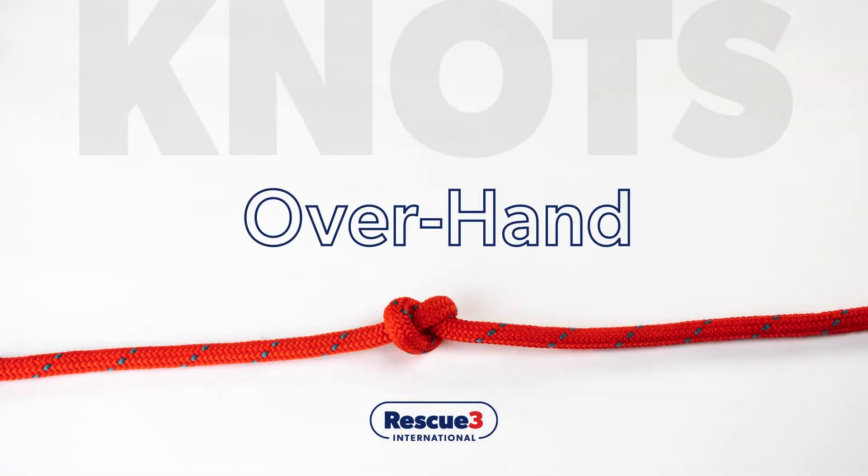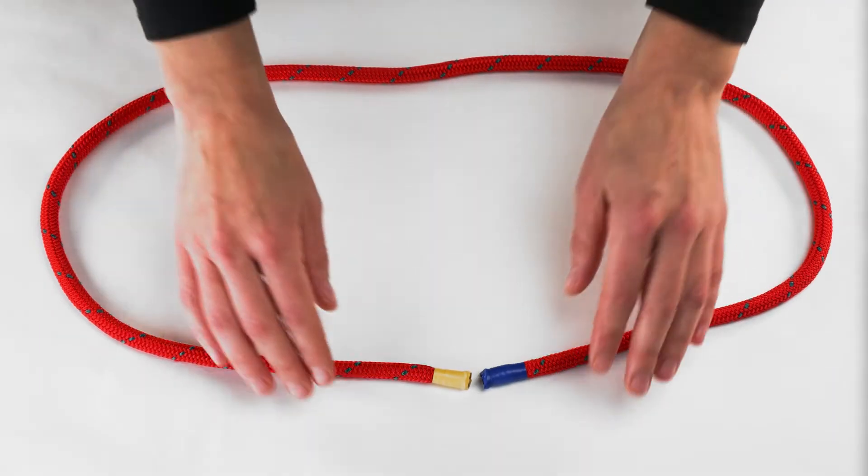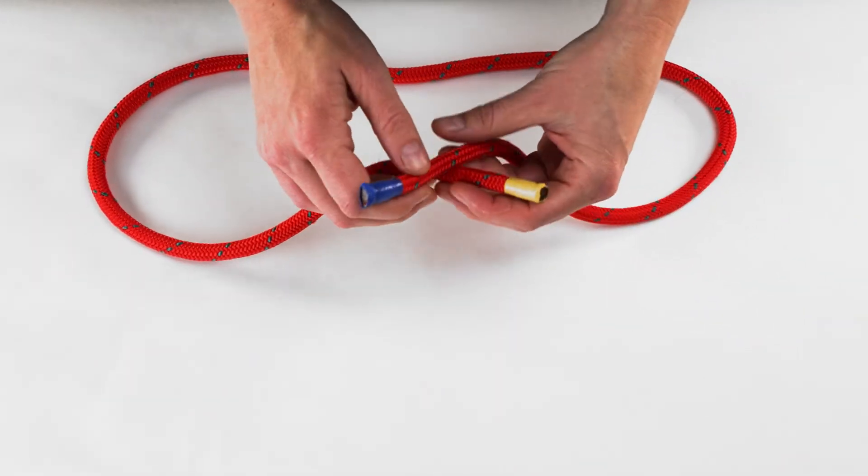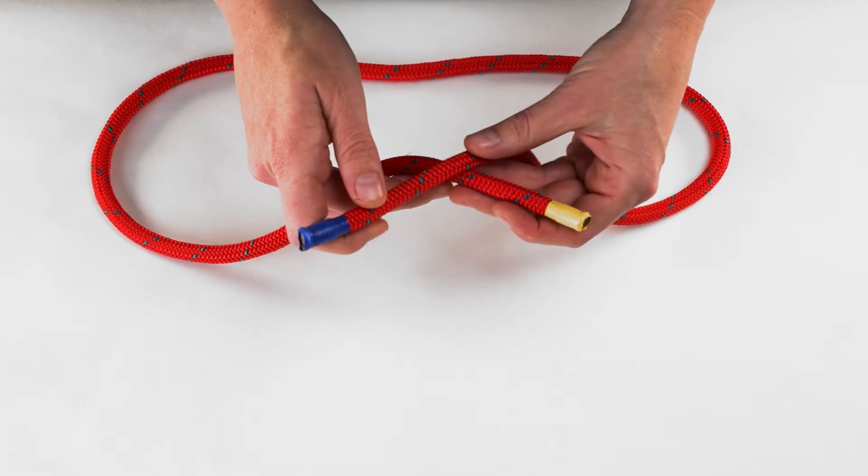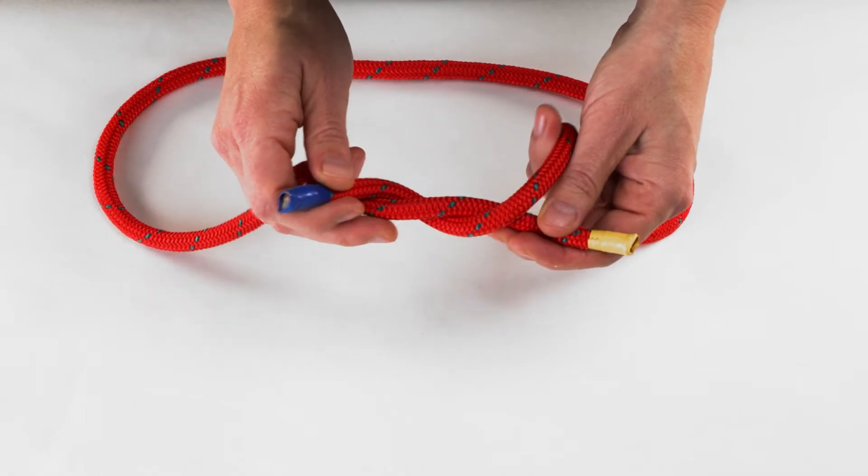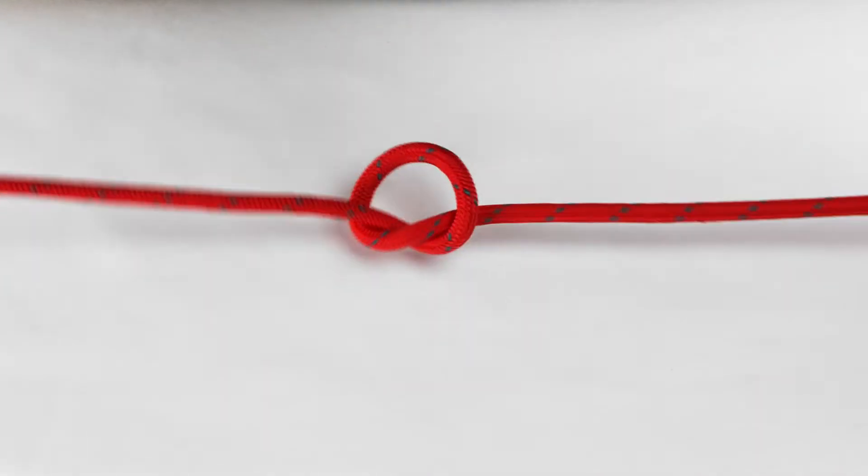Overhand knot. To tie an overhand knot, take the two ends of your rope and cross the working end over the standing end. Now turn the working end through the loop and pull both ends to tighten.